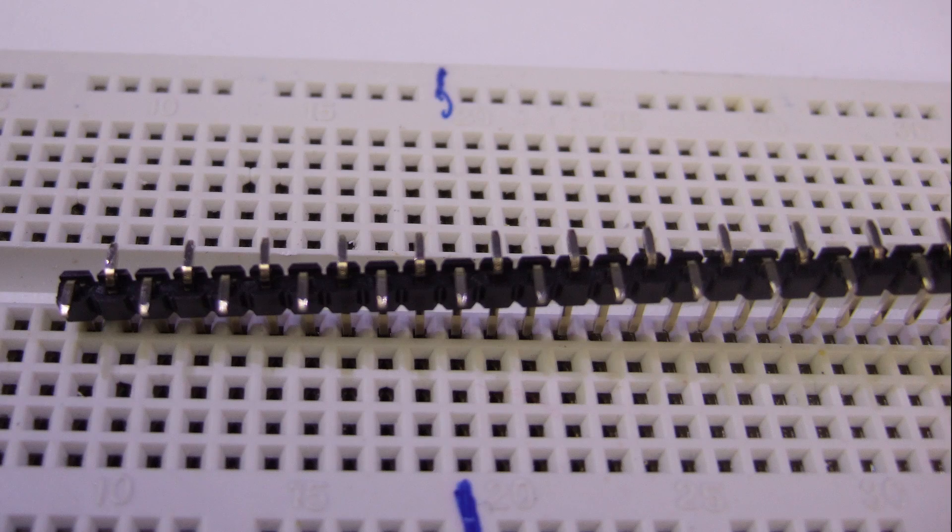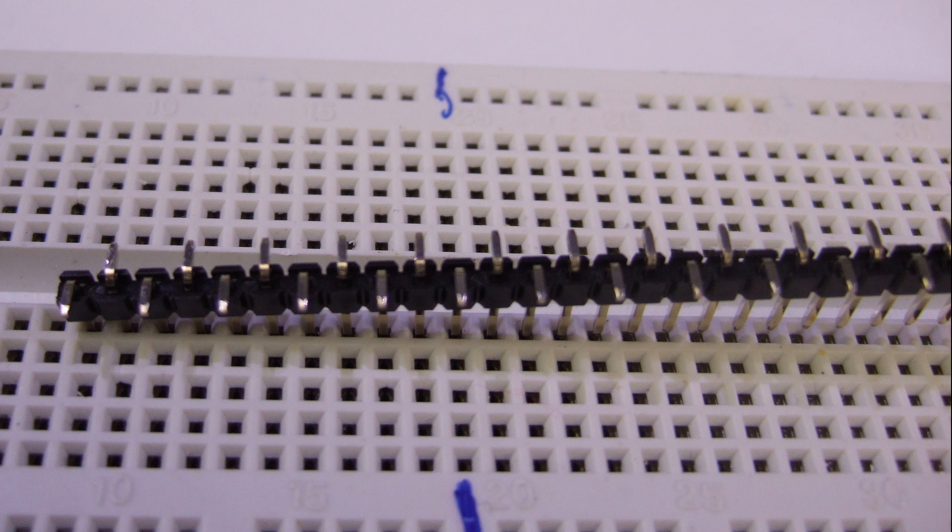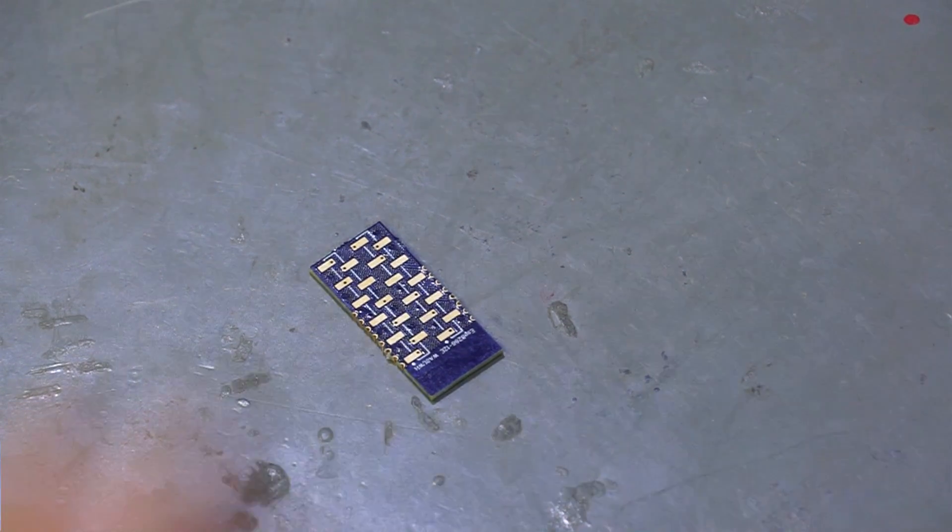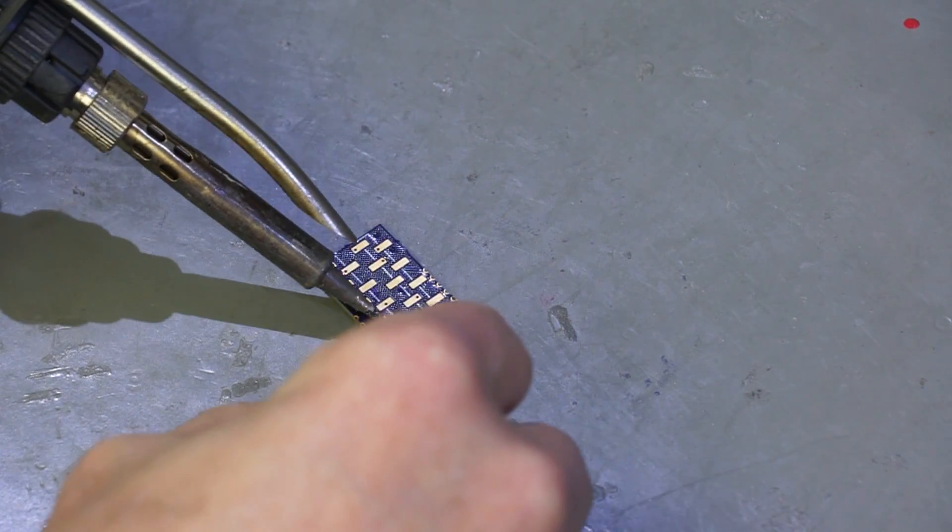The second innovation of this board are the pin headers. Elden uses SMT pin headers instead of normal ones. Normal pin headers are through hole. The ones he uses are soldered like SMD parts on the surface of the PCB. This approach again saves a lot of space.